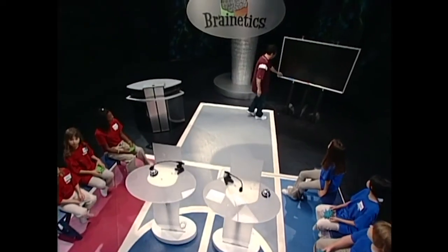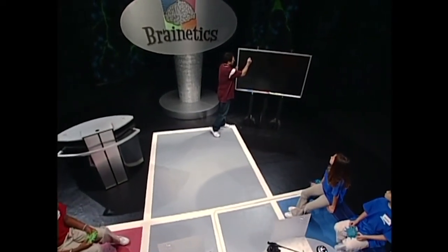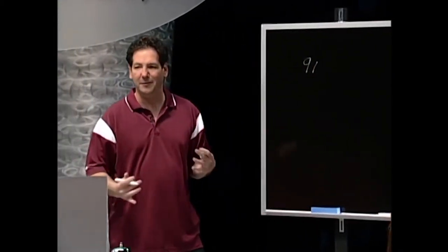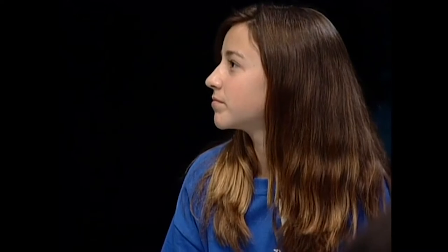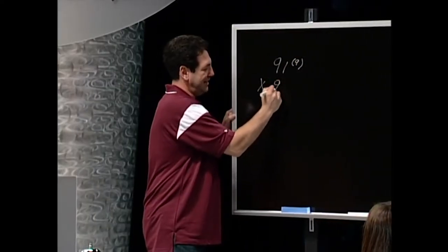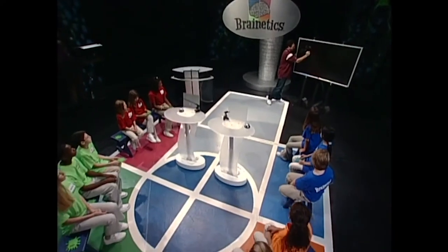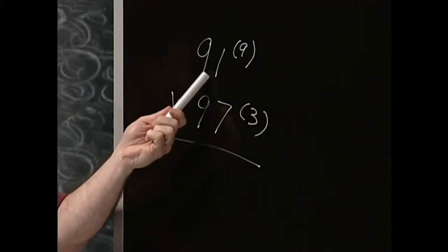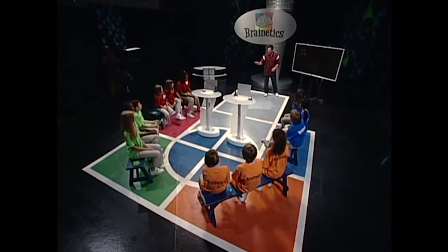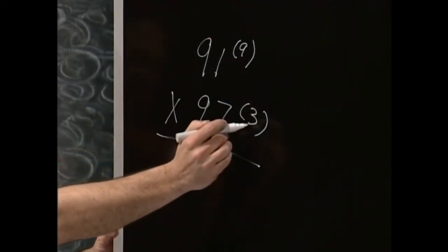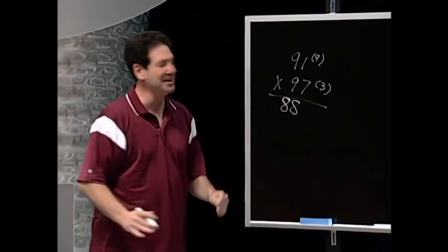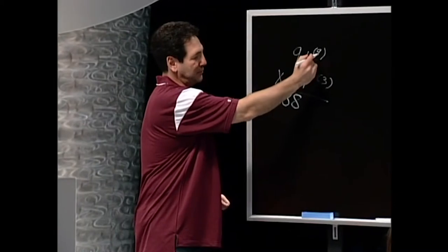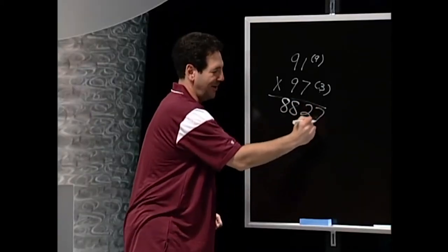Let's use 91 — how far is that number away from 100? 91 is 9 away. Put the little 9 up here. Times 97, which is 3 away. Here's how it works: take the first number, 91, and subtract the second number in parentheses. 91 minus 3 is 88. That's the first part of the answer. Second part: multiply the two numbers in parentheses together. 9 times 3 is 27. You guys are awesome!